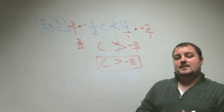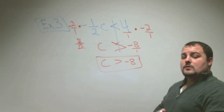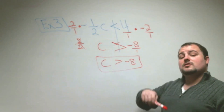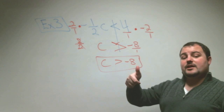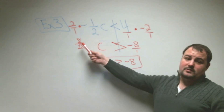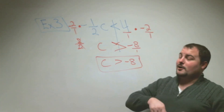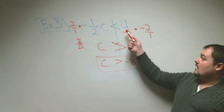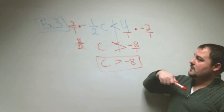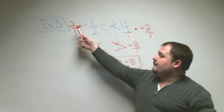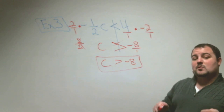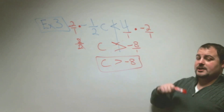So c is greater than negative 8. Remember: to get rid of a fraction next to a variable, multiply both sides by the same fraction flipped — the reciprocal — so you get a number divided by itself equaling 1. Since we multiplied by a negative, the inequality sign changes direction. Anytime you multiply or divide by a negative, your sign changes direction.